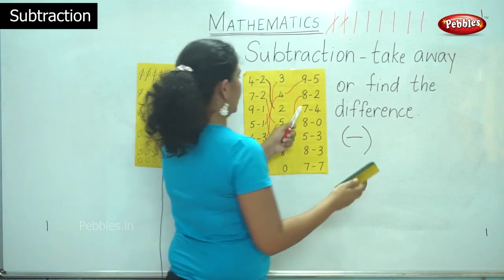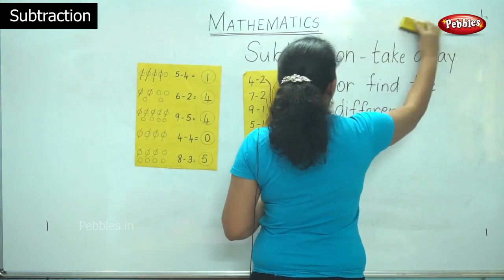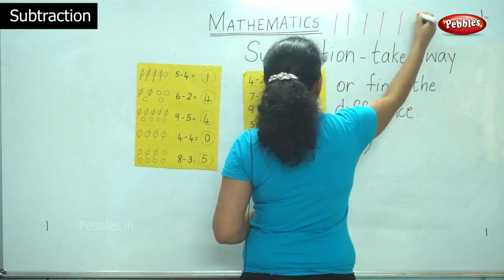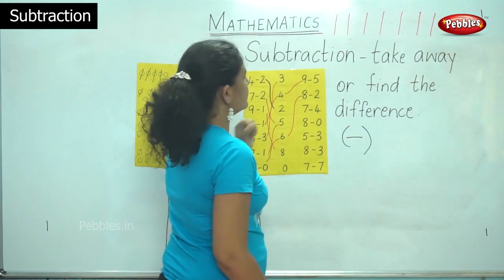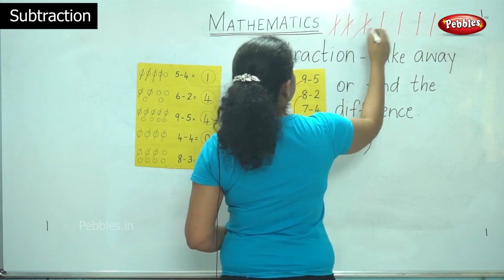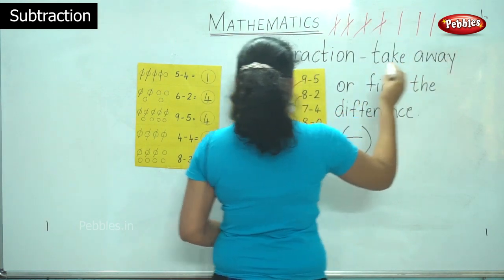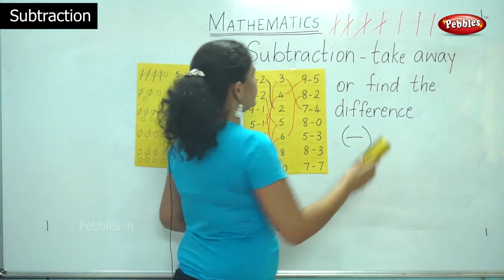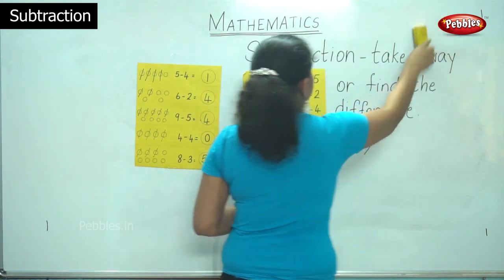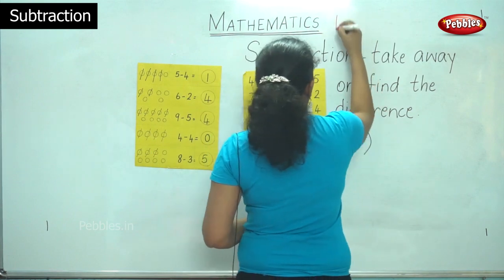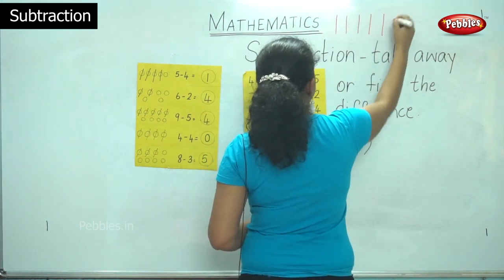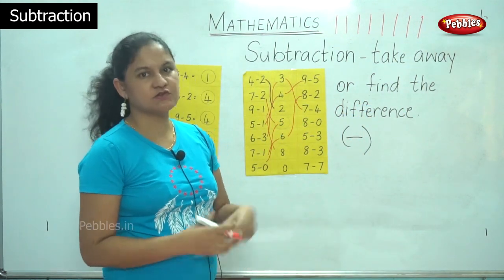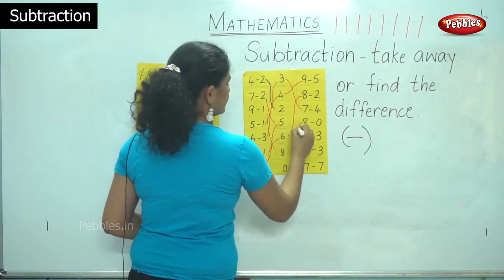Next sum I have 7 take away 4. So I have 7 sticks: 1, 2, 3, 4, 5, 6, 7. 7 sticks minus 4: 1, 2, 3, 4. So my answer is 1, 2, 3 — so I will match it up to number 3. The next I have 8 take away 0, 8 minus 0. So I have 1, 2, 3, 4, 5, 6, 7, 8. I am not taking away any sticks, so the answer remains the same. 8 take away 0 gives me 8.